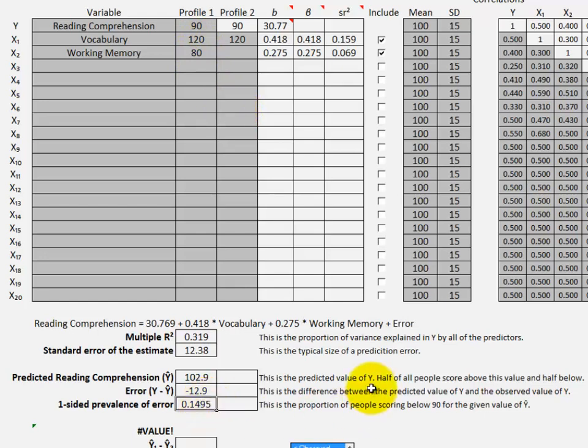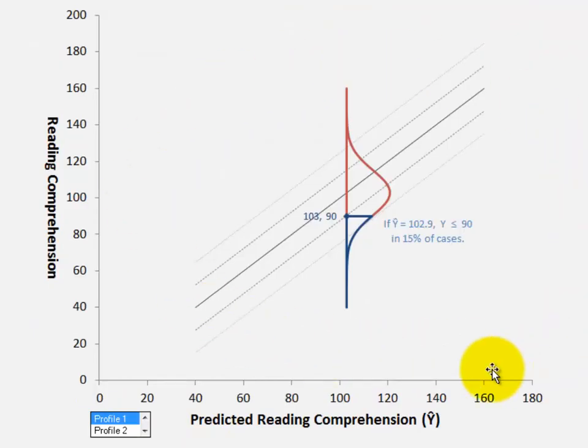almost 15% of people score 90 or below. Here we have the conditional distribution. The predicted reading comprehension score is 102.9 and about 15% of cases score 90 or below.